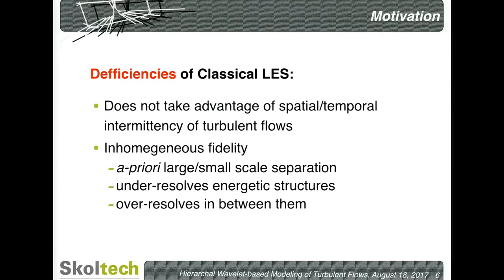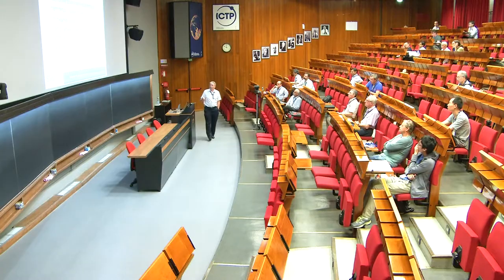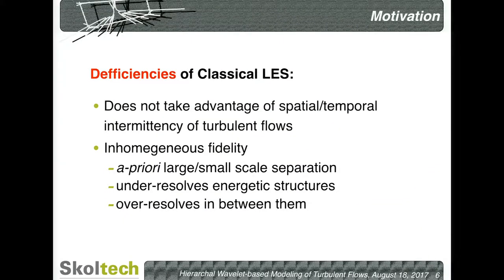What are the main deficiencies of classical LES? Number one: classical LES does not take advantage of the main turbulence feature — intermittency. You decide beforehand what is large or small and don't take advantage of it. As a result, your flow fields in LES don't have uniform fidelity. In some regions of the flow, very important regions have under-resolution; in other regions where nothing is going on, you have over-resolution. The main issue is that you a priori decide what is large and what is small, while in reality you're going after dynamically important structures whose scale depends on the flow, particular location, and particular moment in time.